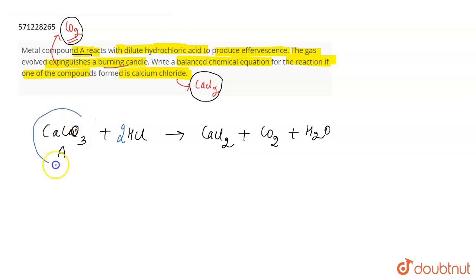Therefore, compound A that they are talking about is calcium carbonate because it reacts with HCl to form CaCl2, which is one of the products, and carbon dioxide gas is liberated. This gas is the brisk effervescence and it extinguishes fire.